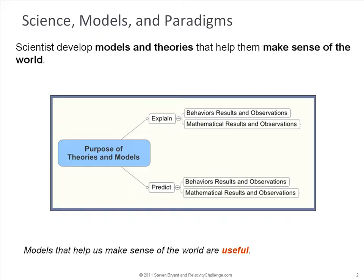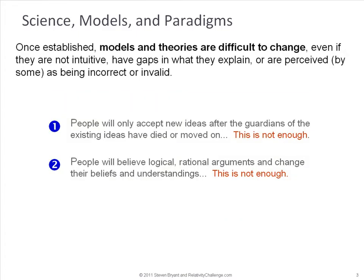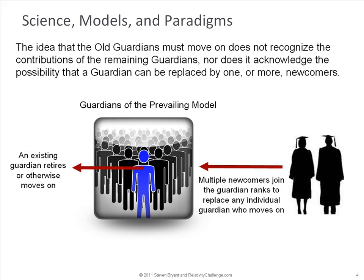This creates an opportunity for new models to be introduced. When new models are introduced, there are a couple of different schools of thought as to how paradigm shifts occur. One, which was advocated by Max Planck, is that the old guard has to die or move on. The second, advocated by Thomas Kuhn, is that people will believe logical, rational arguments. And as you'll see shortly, both of these, while partially true, are not enough.